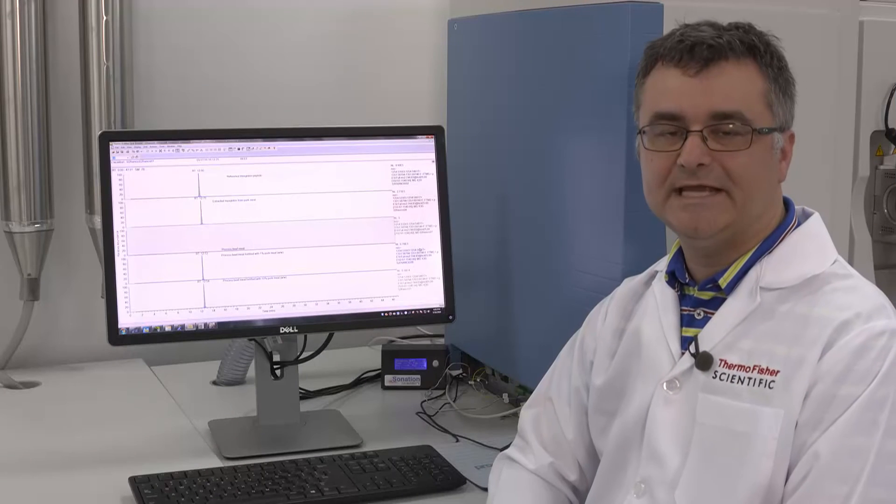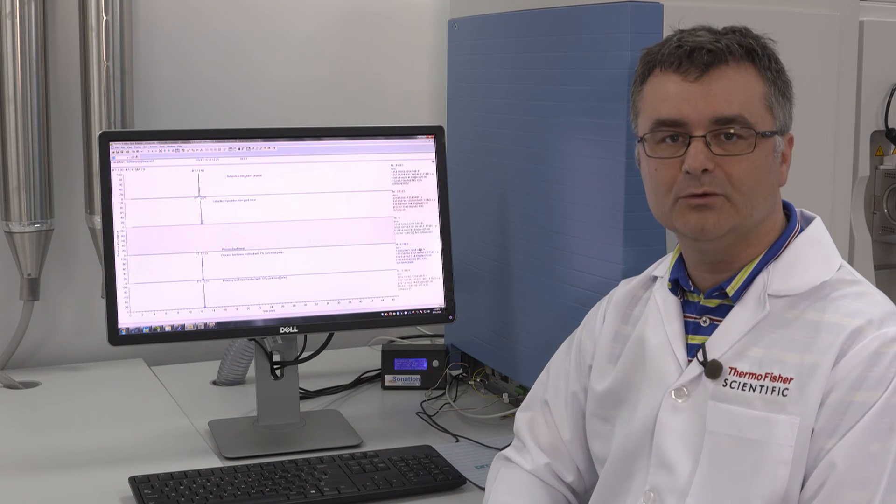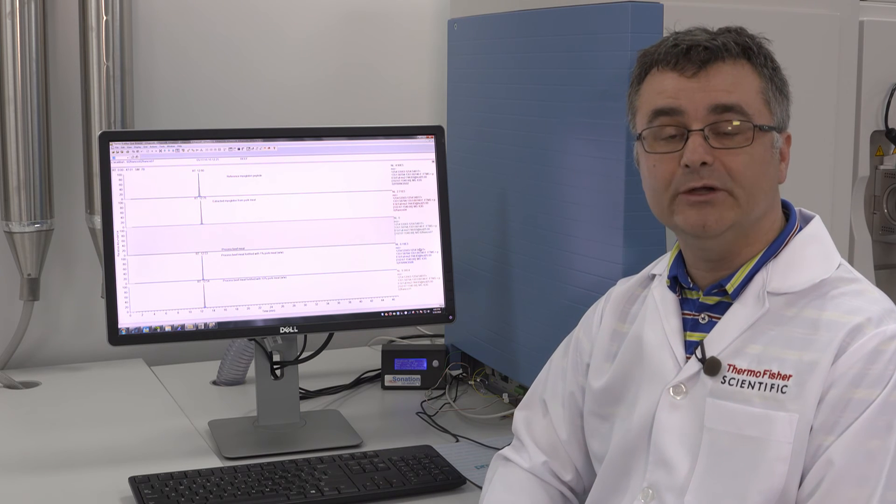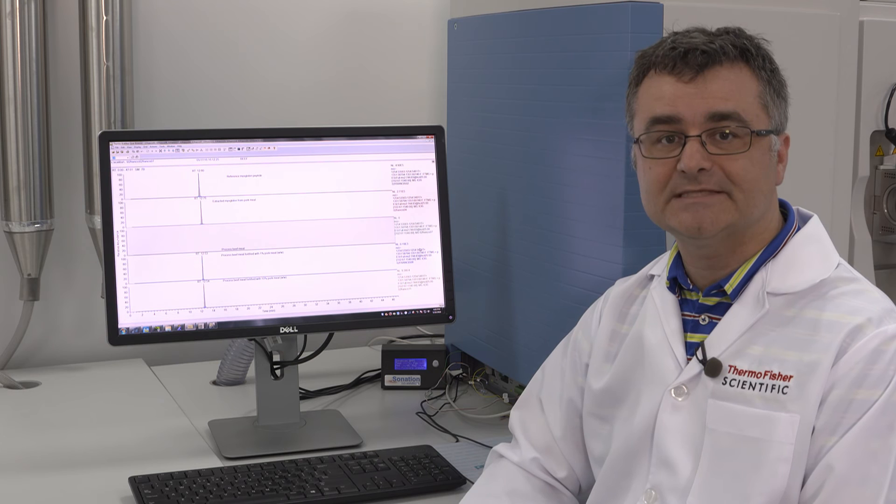Meat authenticity and speciation can be done with specific tryptic peptides. Today we'll show you an example using myoglobin tryptic peptides. There's a very specific area around 120 and 140 amino acids we can use. The analysis can be done in full scan mode at high resolution at 140,000 or it can be done in targeted MSMS mode.